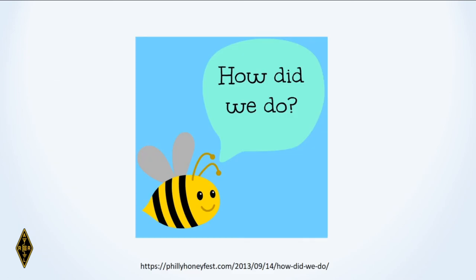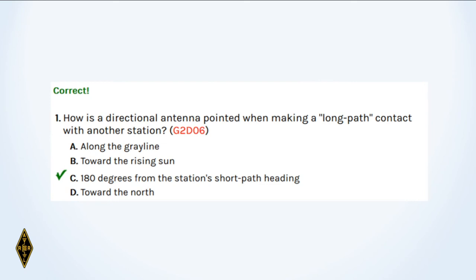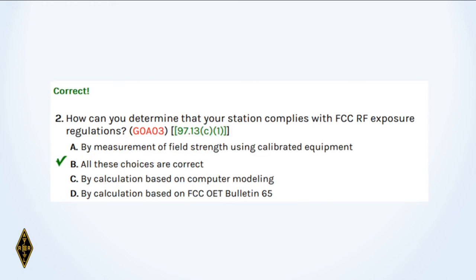Answer number one: How is the directional antenna pointed when making a long path contact? 180 degrees from the station's short path heading. Two: How can you determine that your station complies with RF exposure regulations? All of the above — those are all the three methods.